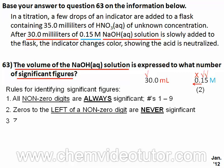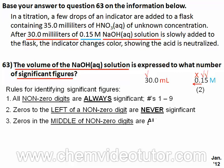Rule number 3 says that zeroes in the middle of non-zero digits are always significant. None of these measurements have zeroes in the middle of non-zero digits, but let's use the number 1007 as an example. Since the 1 and the 7 are non-zero digits, they are significant. And since the two zeroes are in the middle of the 1 and 7, they too are significant, giving this measurement four significant figures.